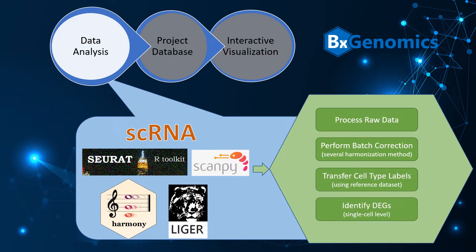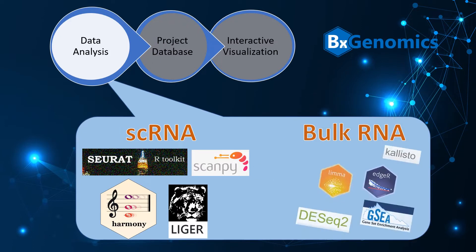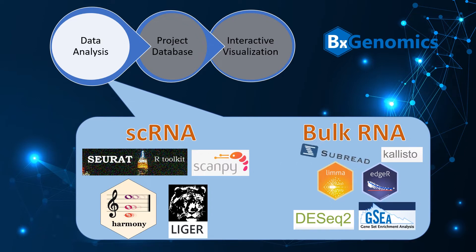Additionally, the pipeline can identify differentially expressed genes at the single cell level. Similarly, popular packages are included for bulk RNA-seq analysis for fast and reliable results.